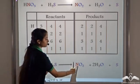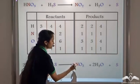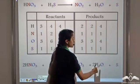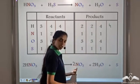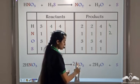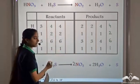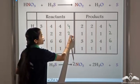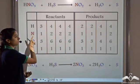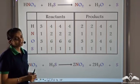To balance the nitrogen atoms: we have 2 atoms on the reactant side and only 1 atom on the product side, so we take 2 molecules of nitrogen dioxide. Now we get 4 atoms of hydrogen, 2 atoms of nitrogen, and 4 plus 2 equals 6 atoms of oxygen, with sulfur remaining at 1. Our hydrogen, nitrogen, oxygen, and sulfur atoms are all balanced. This is our balanced chemical equation.